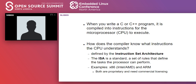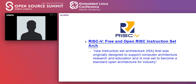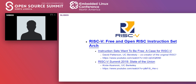Examples you've probably heard of: x86, so Intel and AMD, which most laptops, desktops, and servers are running. And then ARM, which all of us most likely have in our phones. But both of these are proprietary and need commercial licensing to use. RISC-V is a free and open instruction set that came out of a team at UC Berkeley about ten years ago doing computer architecture research.